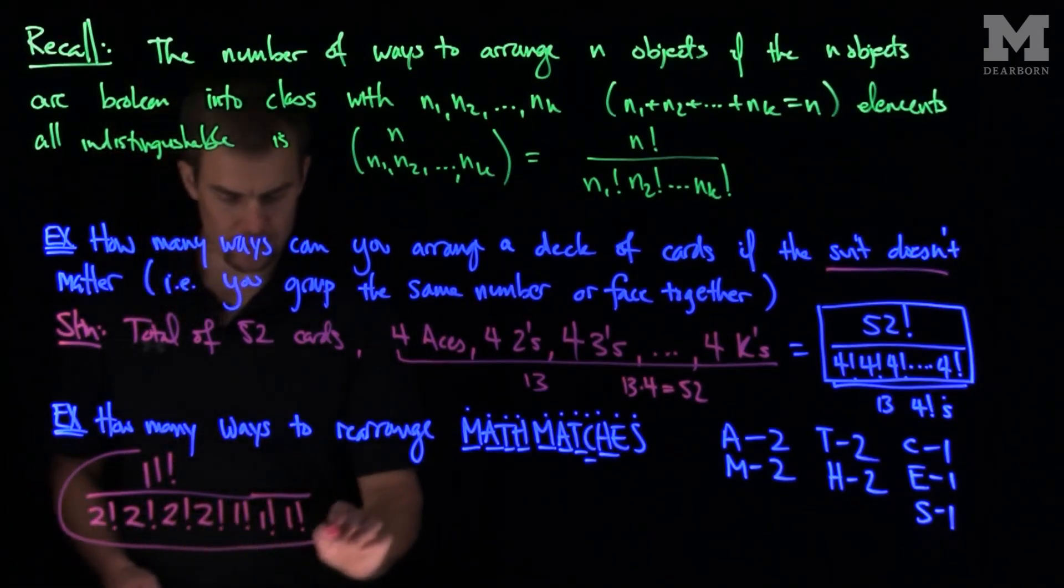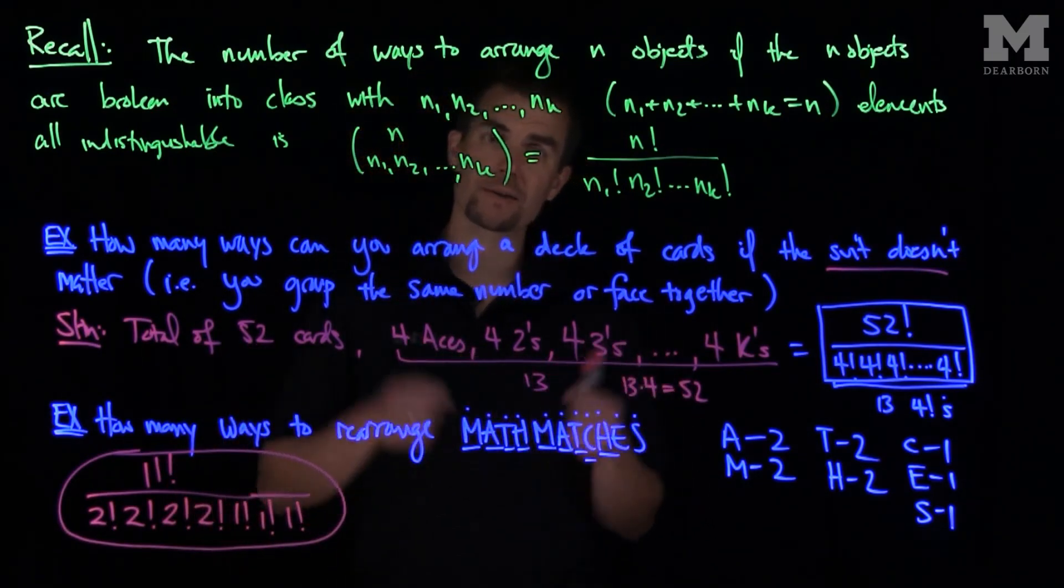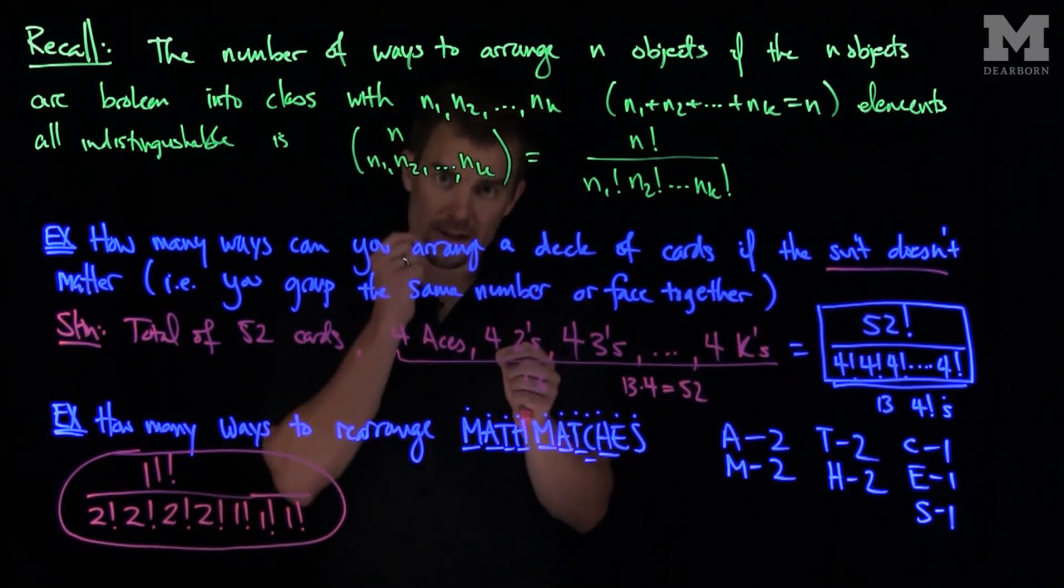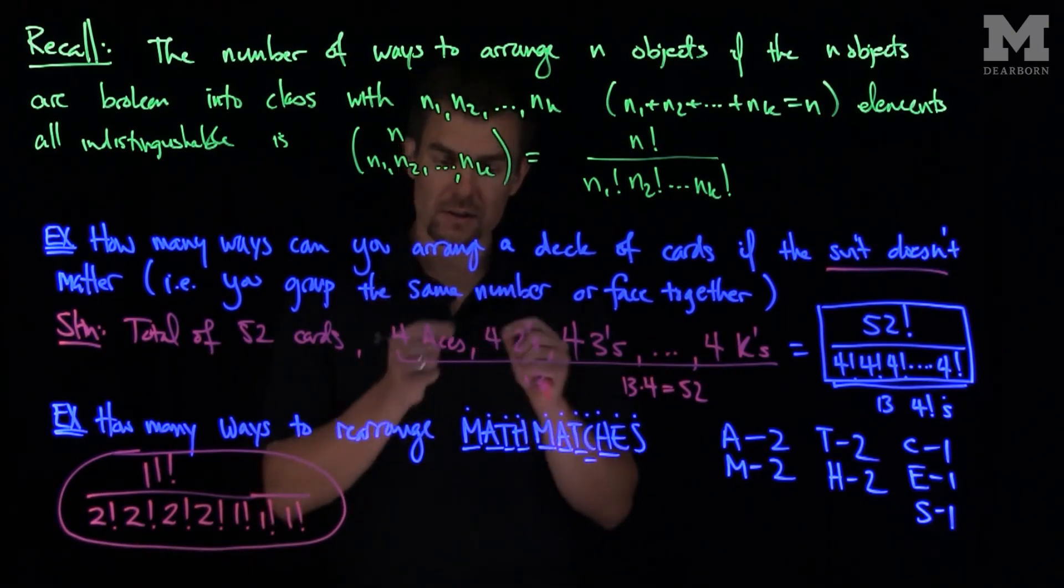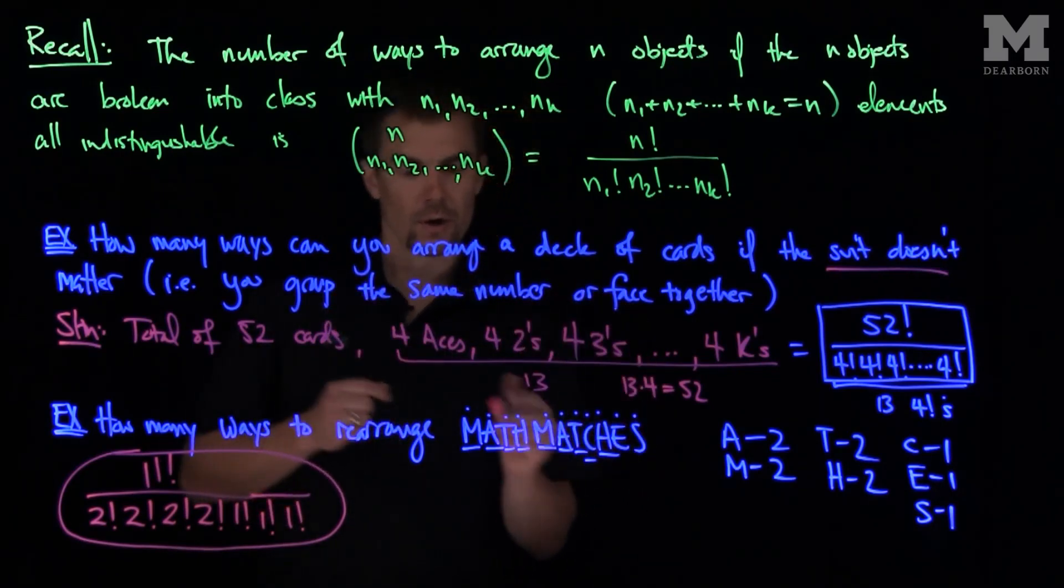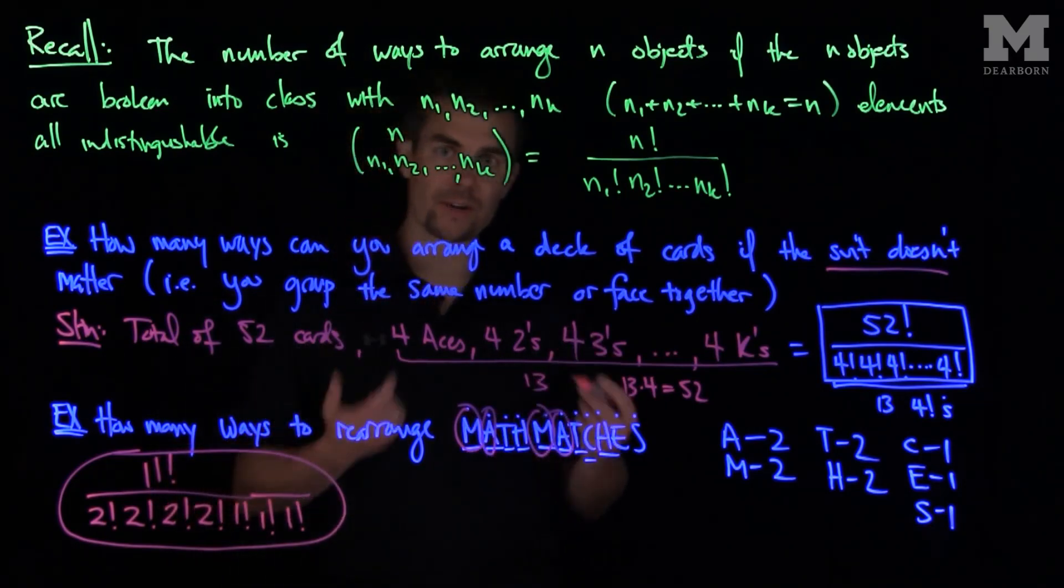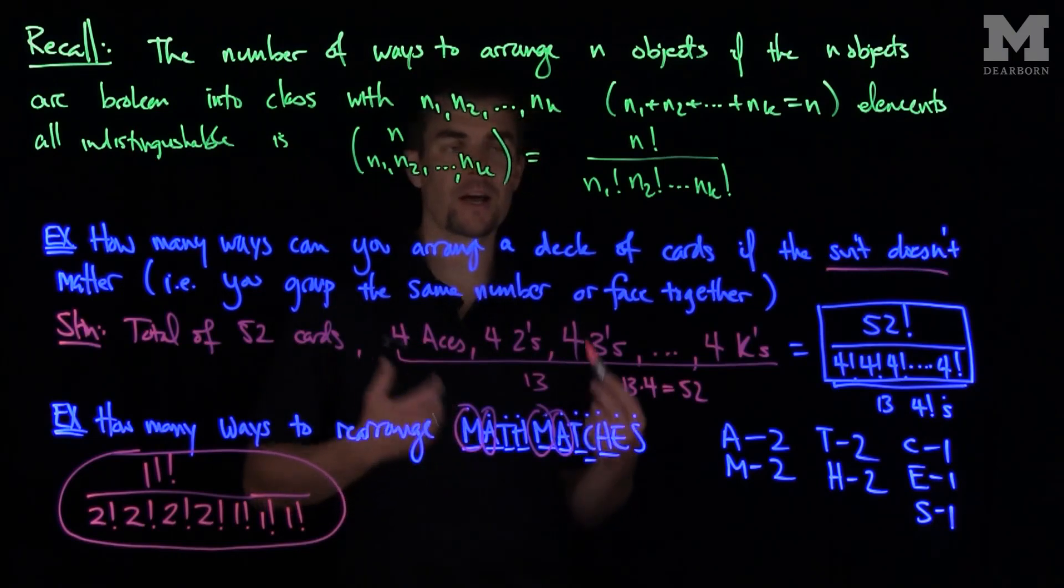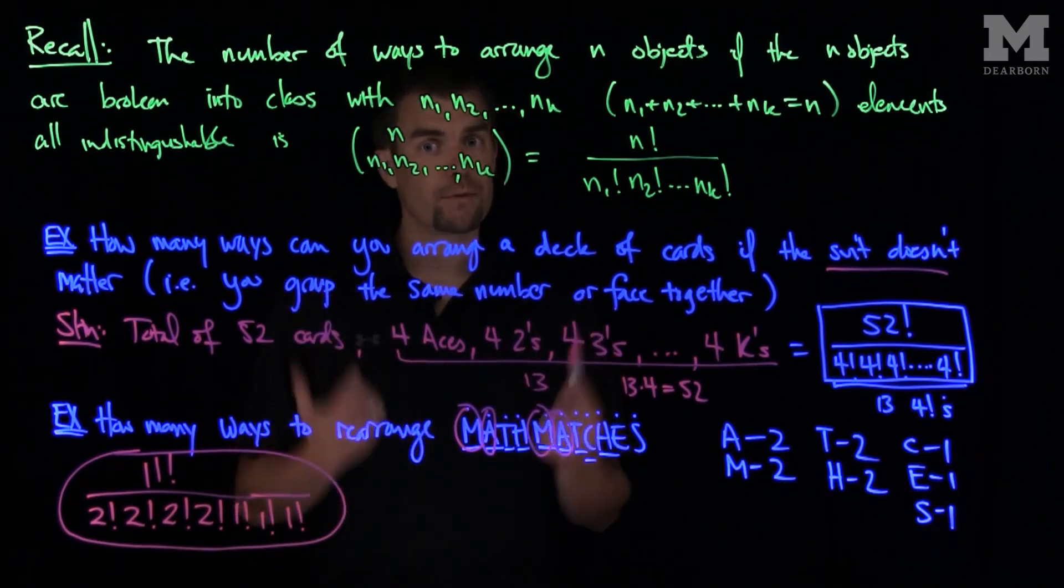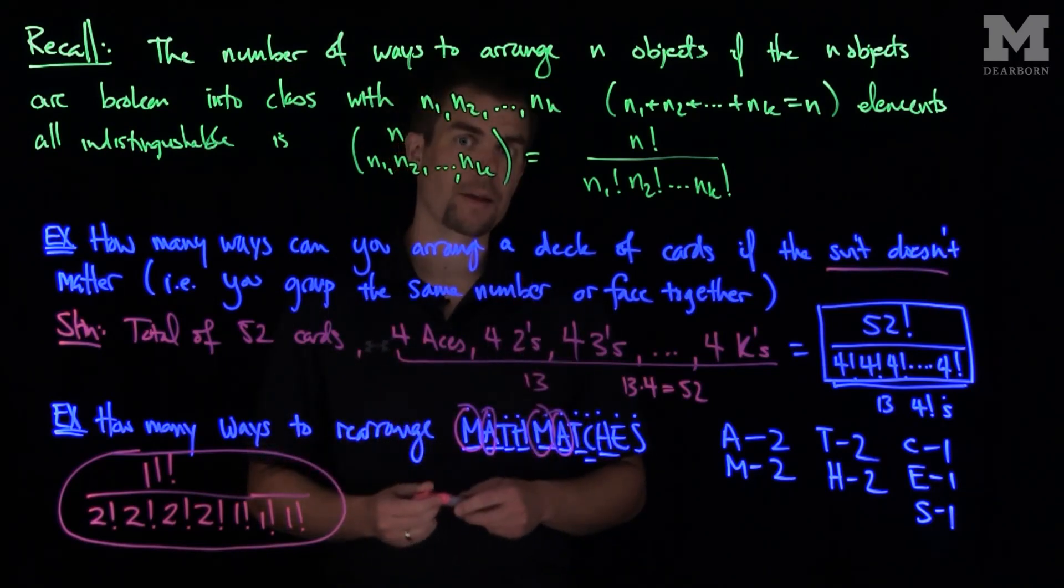And you can simplify this or we can just leave it in this form. This tells us the number of different ways to rearrange the letters in MATHMATCHES, because the letters, for example M and M, are indistinguishable. Likewise, if the suit doesn't matter, the ace of hearts and the ace of clubs are the same card because we don't care about the suit. Similarly with the twos: the two of clubs and the two of diamonds are indistinguishable from that perspective because they're both twos. So these M's are exactly the same, the A's are exactly the same. And so the number of ways to arrange them, we use this multinomial coefficient: n factorial over n1 factorial, n2 factorial, n3 factorial, all the way up to nk factorial. In future videos we'll see how we can write down the multinomial theorem and how we can track the coefficients using this formula. Thank you very much.